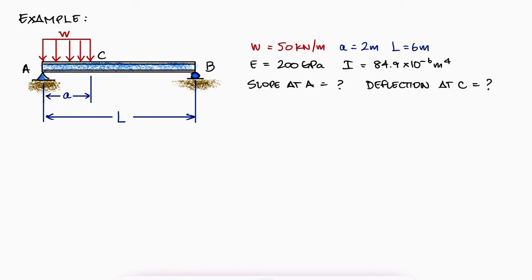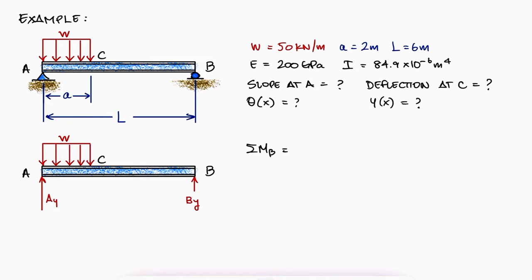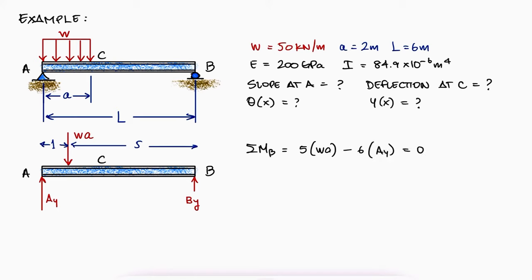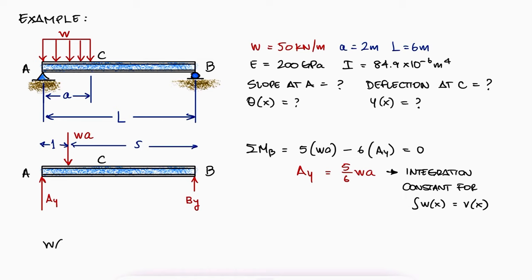Since the singularity functions we'll use will begin from left to right, we need to find the reaction force at A — we won't need the reaction force at B. With a quick free body diagram and a sum of moments about B, substituting the distributed load by a point load with magnitude WA located at 5 meters from B, we find that the reaction at A equals 5 over 6 times WA. This point load is important because it will be part of the constants added after integrating the distributed load w.